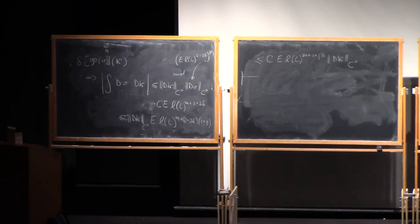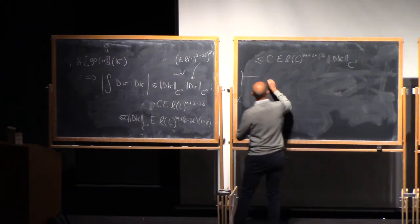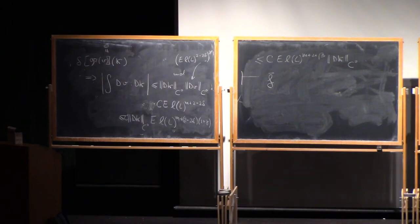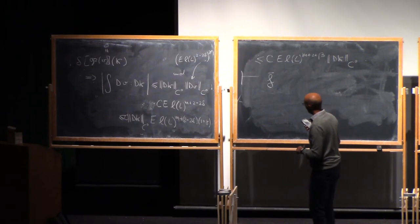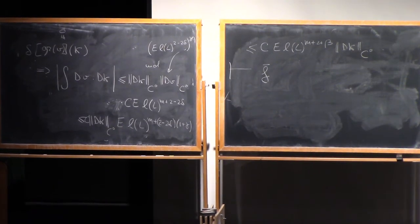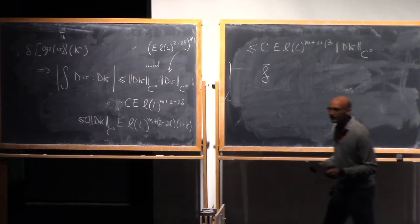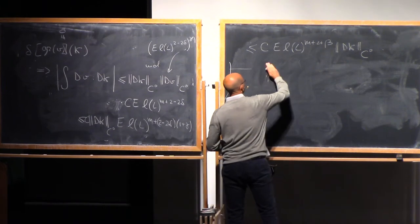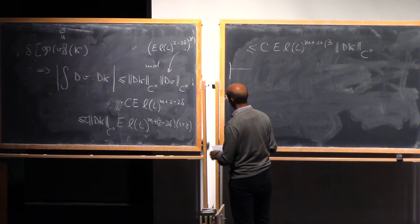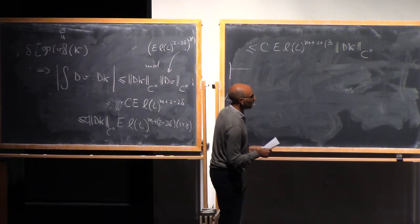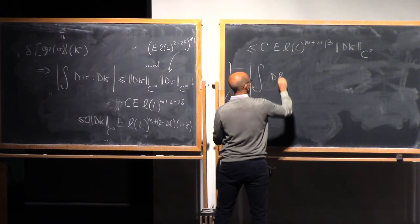That's interesting, but I actually want to make the estimate for the approximation F bar, the Lipschitz approximation of V. So I might actually have mixed up the order, but in the notes you have the correct order. I actually want to claim the same estimate on F bar times dk.